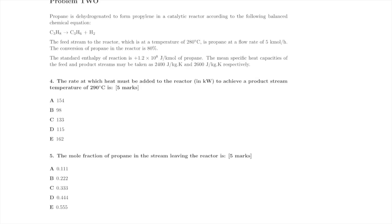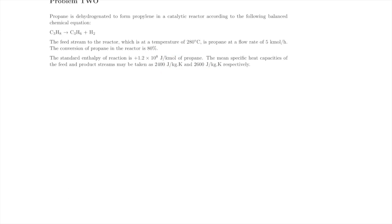Problem 2: we're looking at the dehydrogenation of propane to make propene in a catalytic reactor. The feed is at 280°C with a flow of 5 kmol per hour, and the conversion is 80%. We're given the standard heat of reaction: 1.2 × 10⁸ joules per kmol of propane, and two specific heat capacities. We're asked what rate heat must be added to achieve a product stream temperature of 290°C.